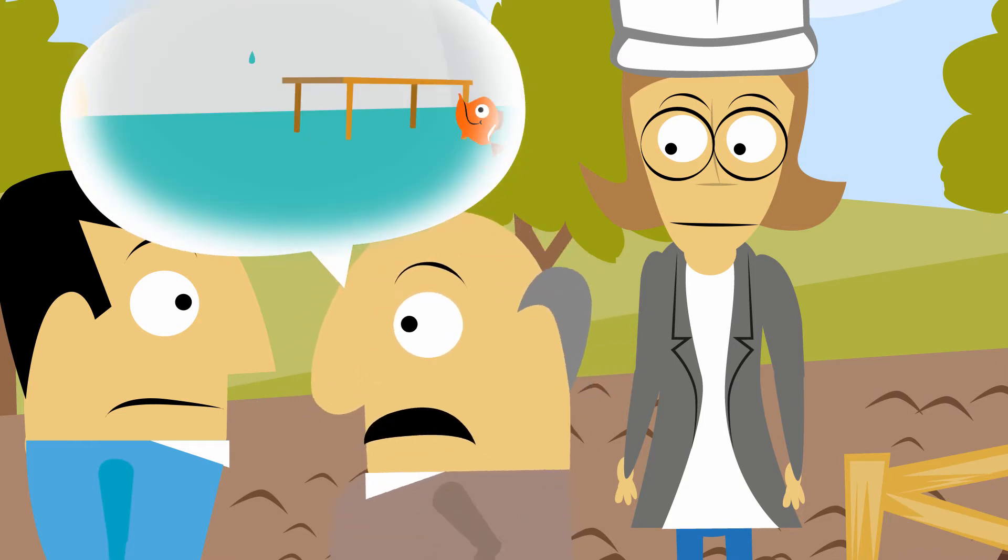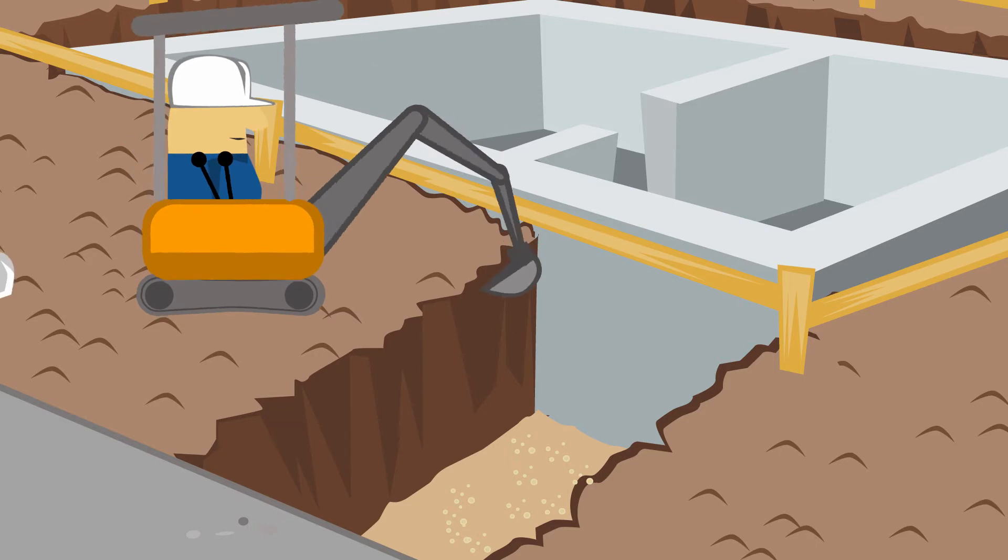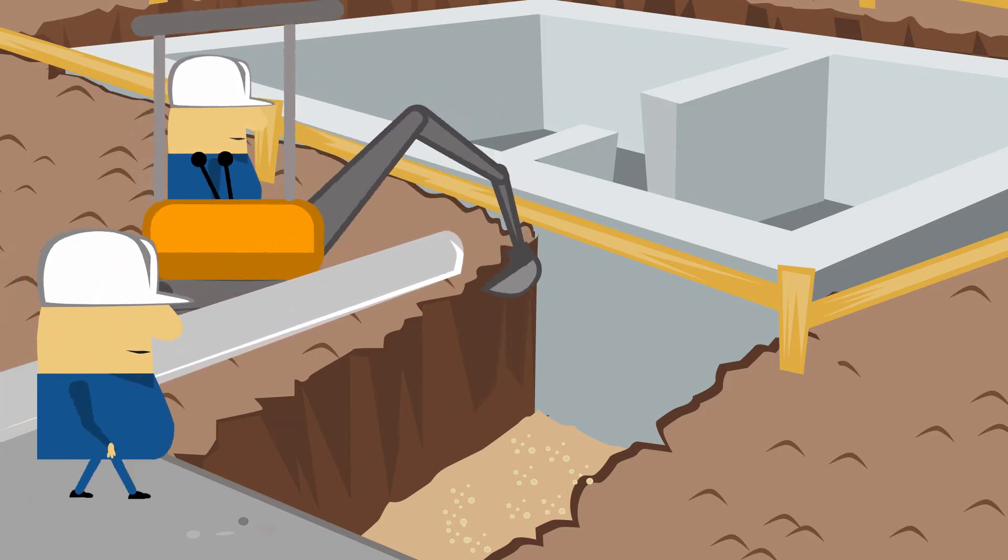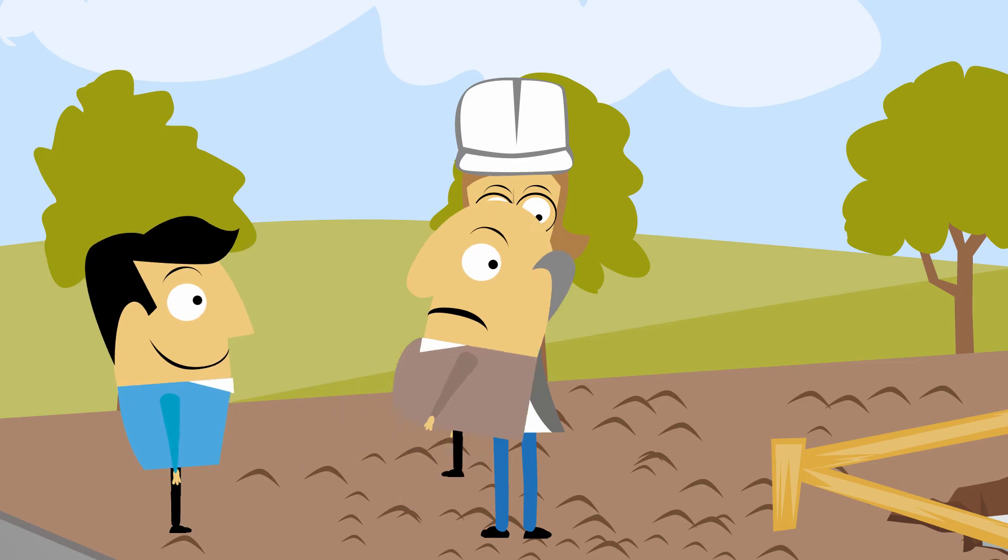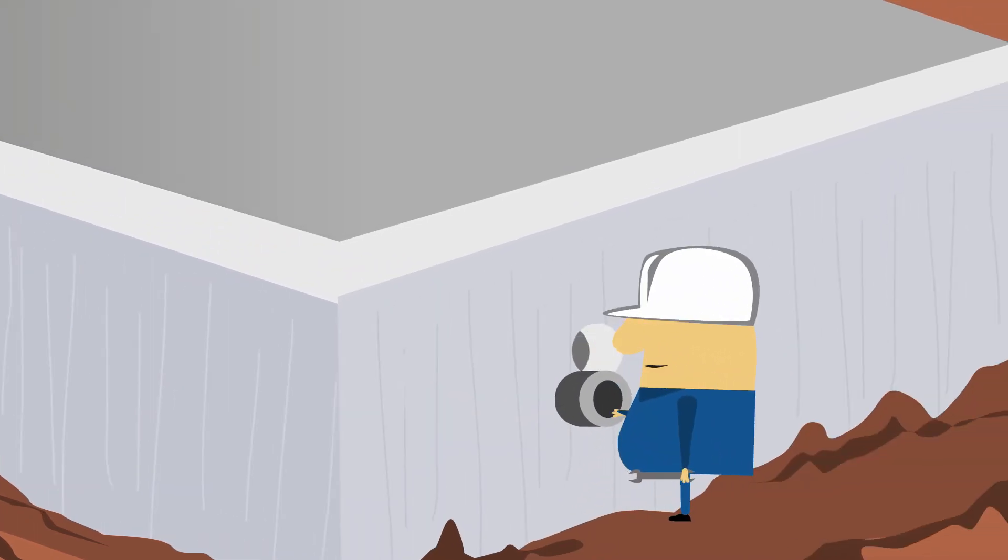Keeping a home sealed and dry means thinking about everything in advance, about space for laying utility lines, and about how to connect them to the house, whether it's a bundle of lines in a single spot or just one.